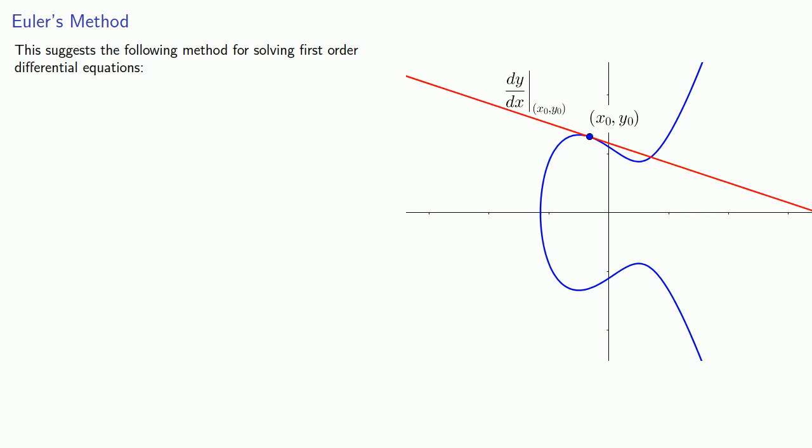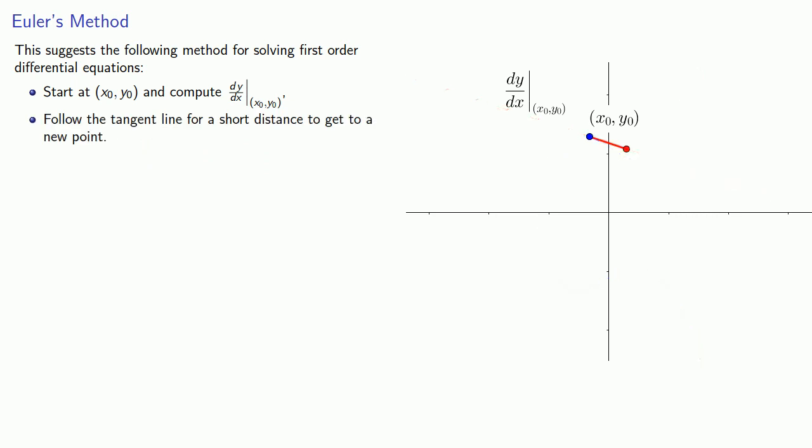And this suggests the following method for solving first order differential equations. We'll start at our initial point and compute the derivative at that point. We'll follow the tangent line for a short distance to get to a new point. We'll compute the derivative at the new point, which gives us a new tangent line. We'll follow that for a short distance. And we'll lather, rinse, repeat.